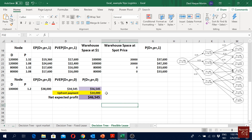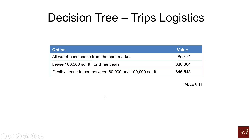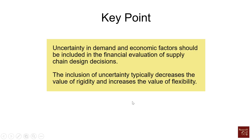Now we can compare all three options. If we buy all space from the spot market, the net present value of future cash flows over three years is $5,000. If we go for a fixed lease of 100,000 square feet for three years, expected profit is $38,000. If we go for the flexible lease allowing 60,000 to 100,000 square feet, we make a profit of $46,000. The third option is clearly the best. This is how decision tree analysis helps us make strategic decisions — the key point is that uncertainty about demand and other economic factors should be included in financial evaluations of supply chain designs.